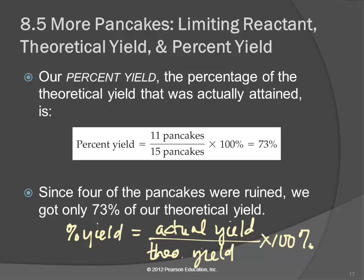We use percent yield quite a bit — it's a measure of the efficiency of your reaction. And if you get into industry, that's a really important thing to consider. In this situation, our percent yield was 73%. We made 11 pancakes out of a possible 15.